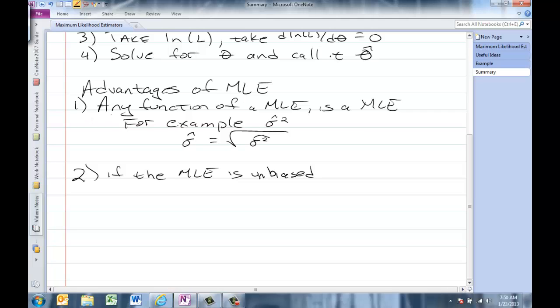And by property one that will be a maximum likelihood estimator. If the maximum likelihood estimator is unbiased, then it usually is minimum variance.